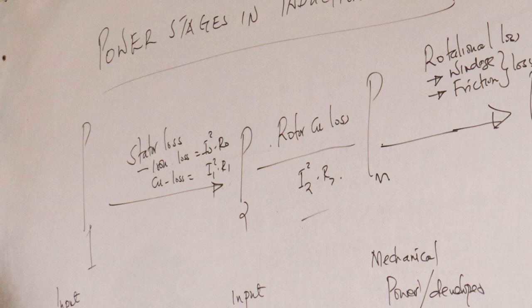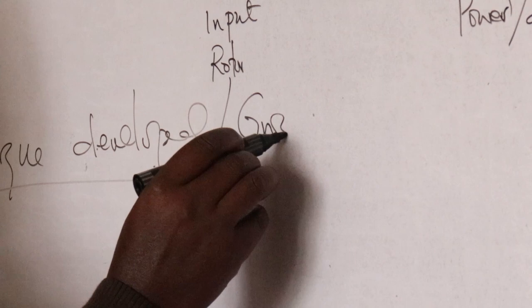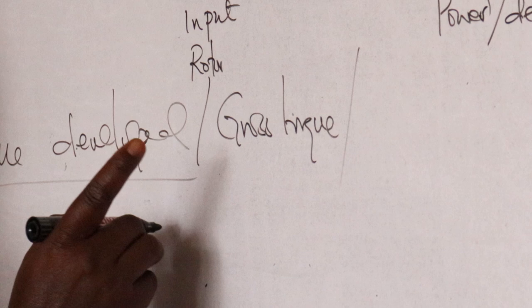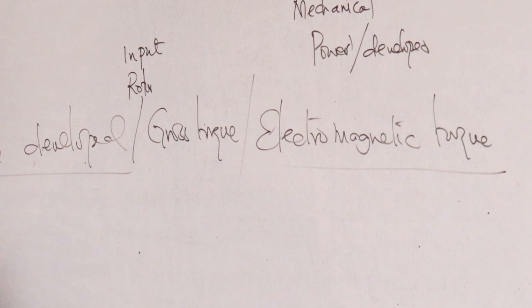Torque developed — it's also called gross torque. These are all names for one thing: torque developed, gross torque, and electromagnetic torque. All these names refer to one thing.